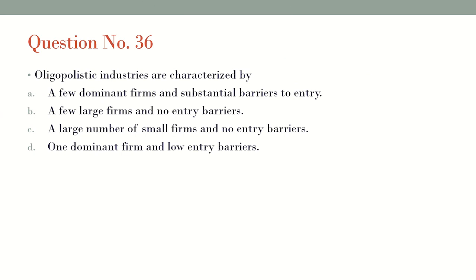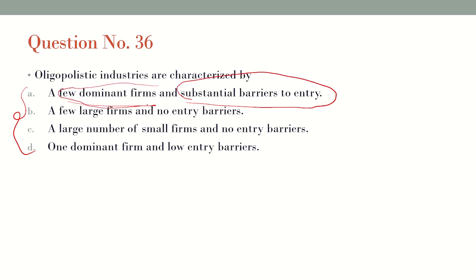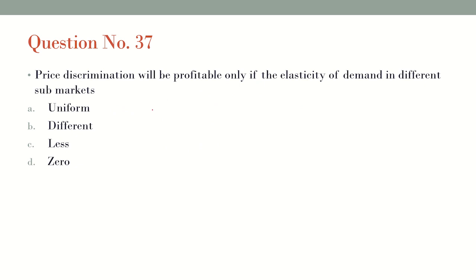Question number 36: Oligopolistic industries are characterized by which of the following? The most defining characteristic feature of oligopoly is few dominant firms and substantial barriers to entry — few firms is condition one, and substantial barriers to entry is condition two. Option B (few large firms and no entry barriers) and option C (large number of small firms and no entry barriers) are incorrect, as is option D (one dominant firm and low entry barriers). So the right answer is option A: few dominant firms and substantial barriers to entry.